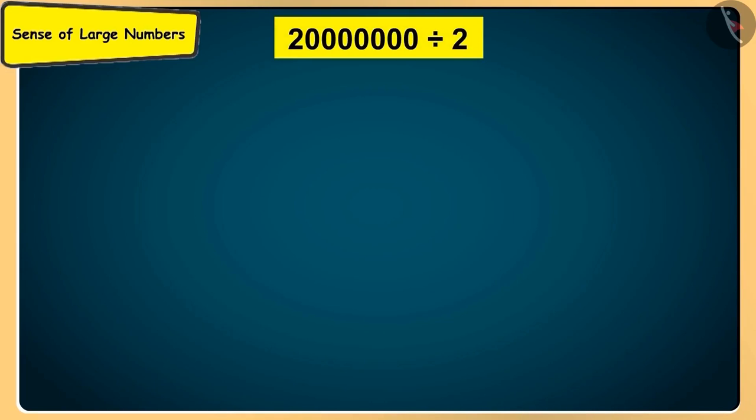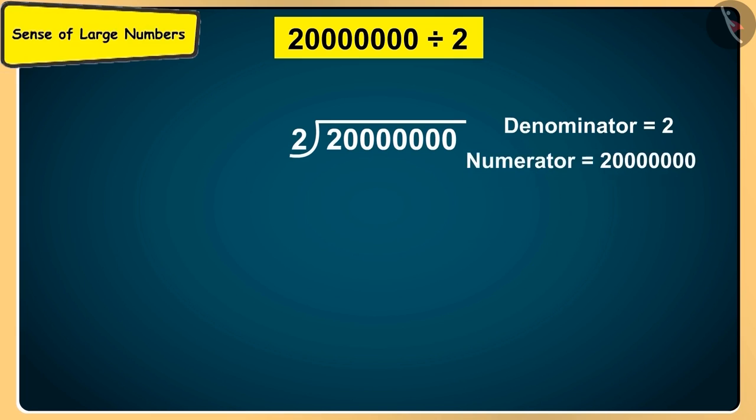Half of 2 crores means if we divide it into 2 equal halves by dividing it by 2. Which means 2 will be the denominator and 2 crores will be the numerator. Now, the first number of the numerator is 2 and the denominator is also 2. So, how many times would it take for the numerator to be divided by 2?